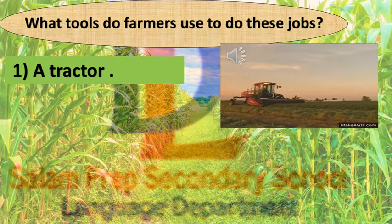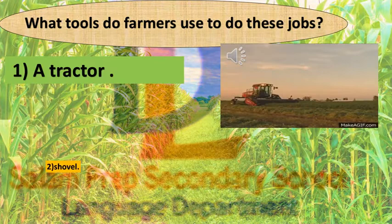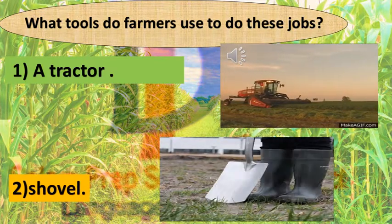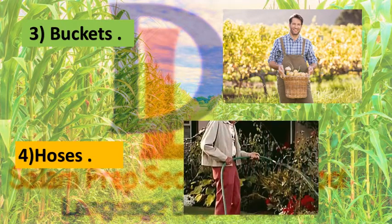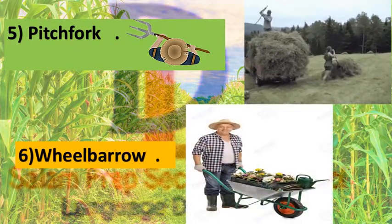Now, what tools do farmers use to do these jobs? Number one: a tractor. Number two: a shovel. Number three: buckets. Number four: hoses. Number five: a pitchfork. Number six: a wheelbarrow.